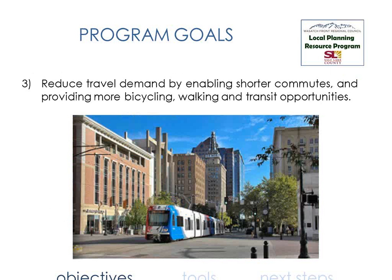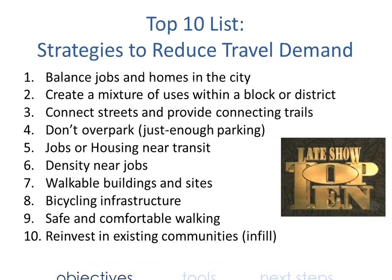One goal is that your application in some way reduces future travel demand by enabling shorter commutes and providing more bicycling, walking, and transit opportunities. We'll deconstruct that goal and illustrate some strategies that might lead to less travel demand. As a metropolitan planning organization, we're trying to help the region be mobile — half of that is how much demand we have, and half is how we supply that demand. Demand reduction is a core aspect.